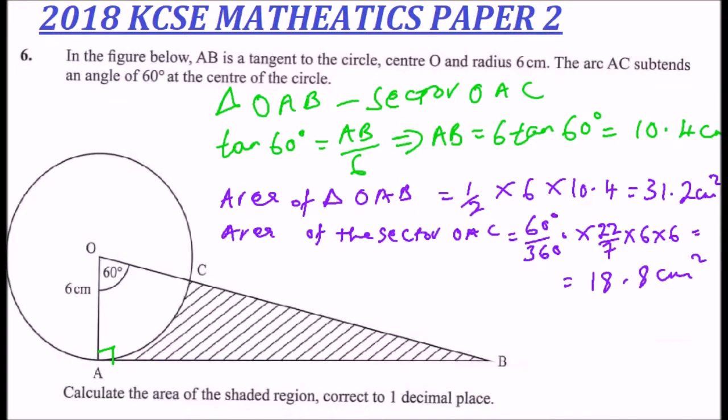So having obtained the area of the sector, we can now get the area of the shaded region, which we said is equal to area of triangle OAB and you subtract the area of sector OAC. This means shaded area is equal to,